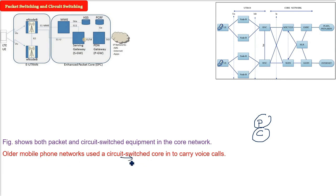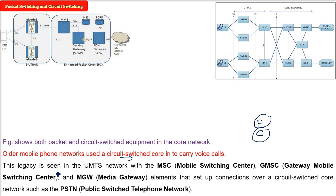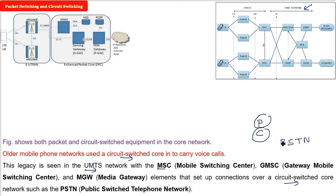In the core network today, there are both packet-switched and circuit-switched equipment. Core networks are still using both. The older mobile phone networks used a circuit-switched core because they were carrying voice calls — that is the 1G systems. But that legacy tradition is still seen in the latest 4G/5G UMTS networks. You see MSC (Mobile Switching Center), GMSC (Gateway Mobile Switching Center), and media gateway (MGW). Circuit-switched core network is still present, similar to PSTN — Public Switched Telephone Network, like BSNL.